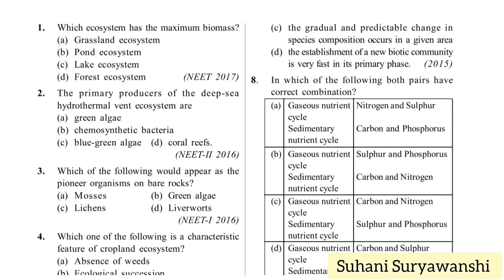Which ecosystem has the maximum biomass? Options are: grassland ecosystem, pond ecosystem, lake ecosystem, and forest ecosystem. The maximum biomass will be in the forest ecosystem. So option D is the right answer.